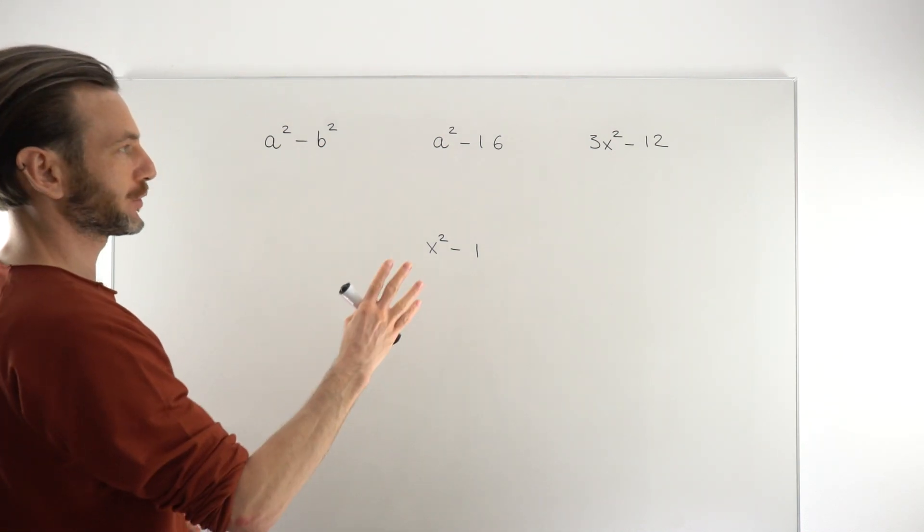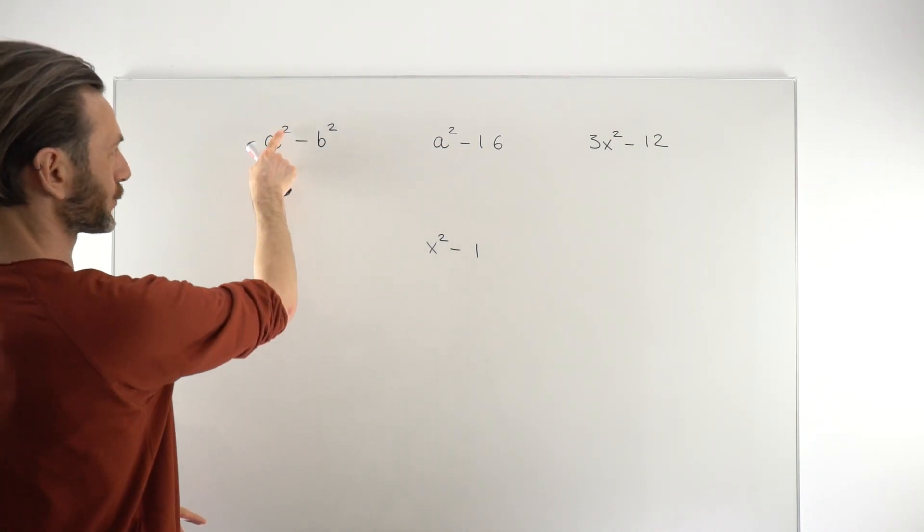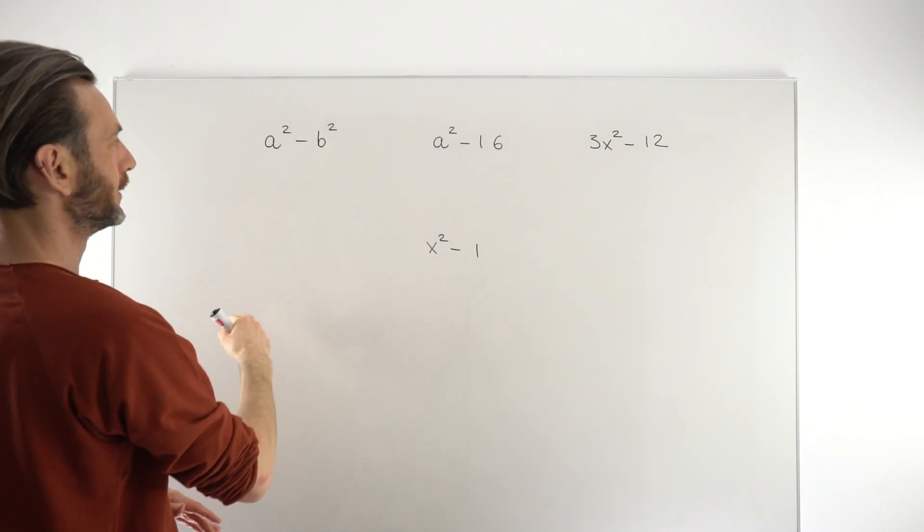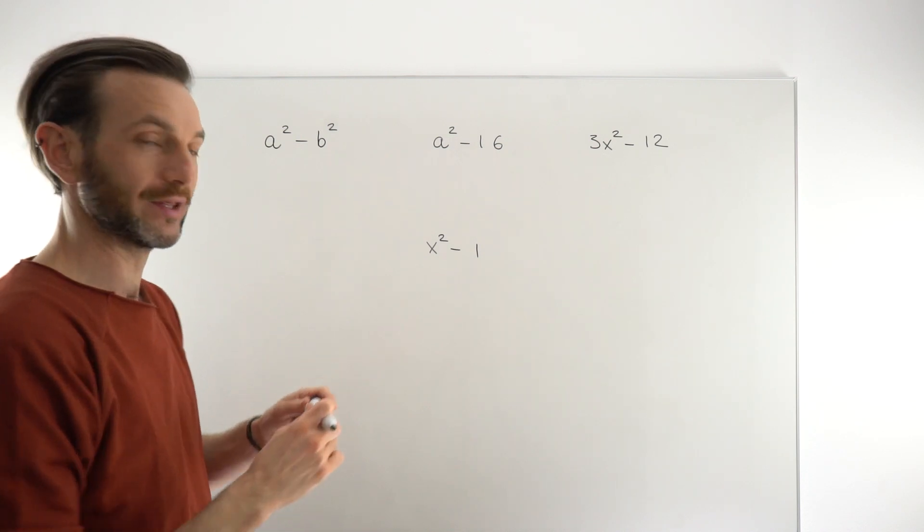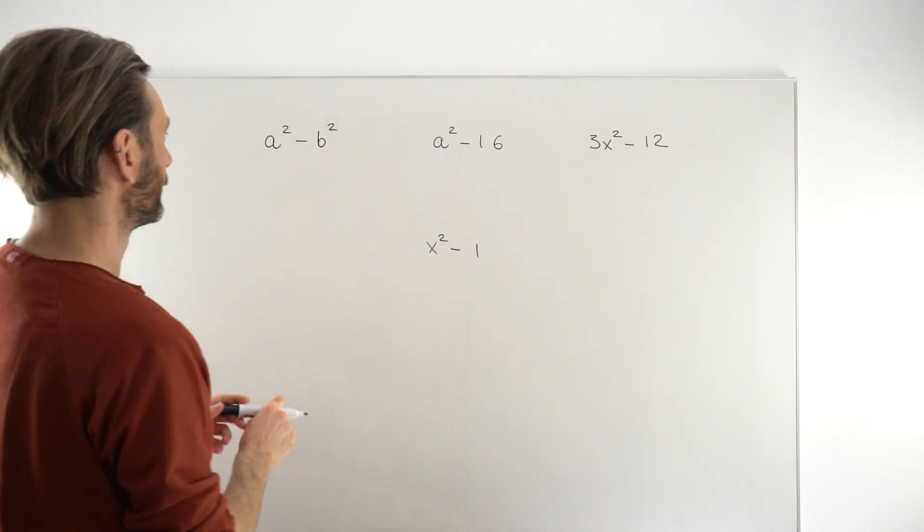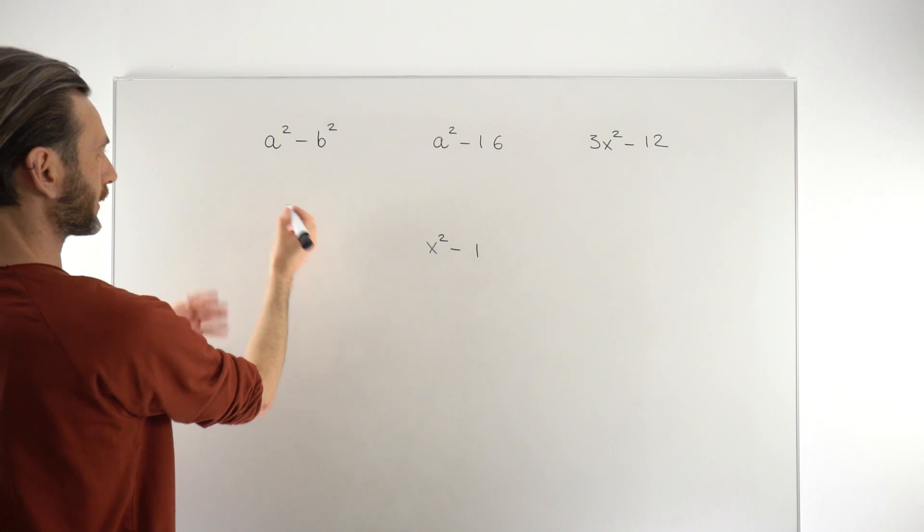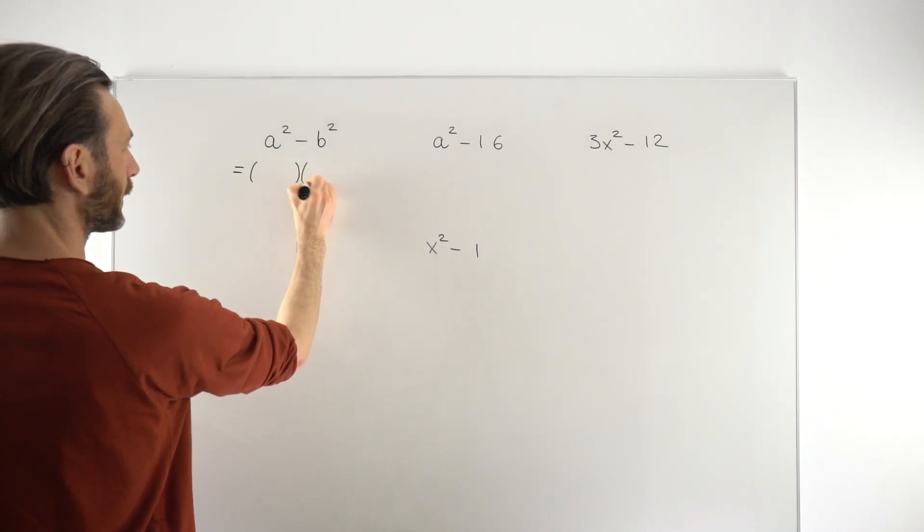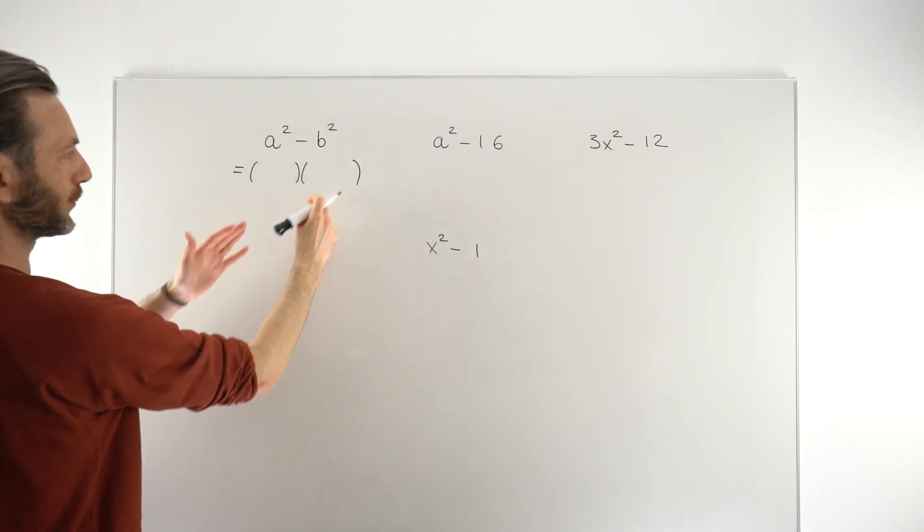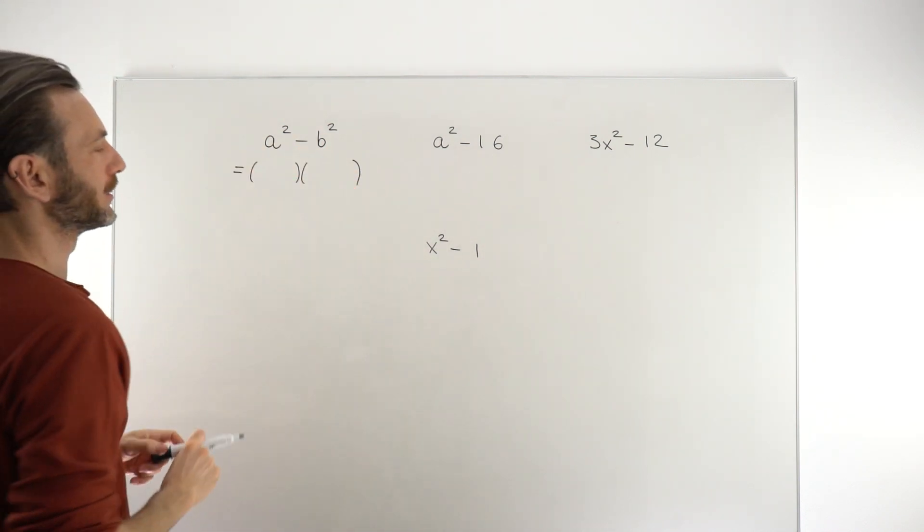We're looking for expressions where you've got something squared minus something squared, and we want to learn how to factorize those into two brackets. The way this works is that we consider how the brackets will look so that if you multiply the brackets you would get back to this.